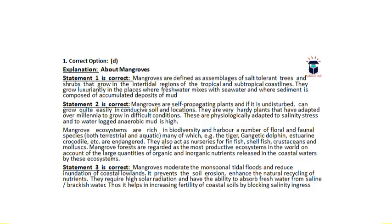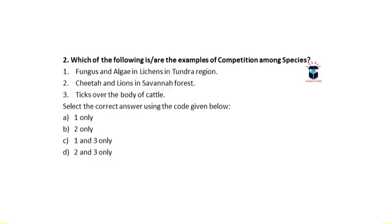There is a little bit of time being consumed loading the explanation on screen. The answer is D. Statement one is correct — mangroves are defined as assemblages of salt-tolerant trees and shrubs that grow in the intertidal regions of tropical and subtropical coastlines. Statements two and three are also correct. You can read the full explanation by pausing the video.